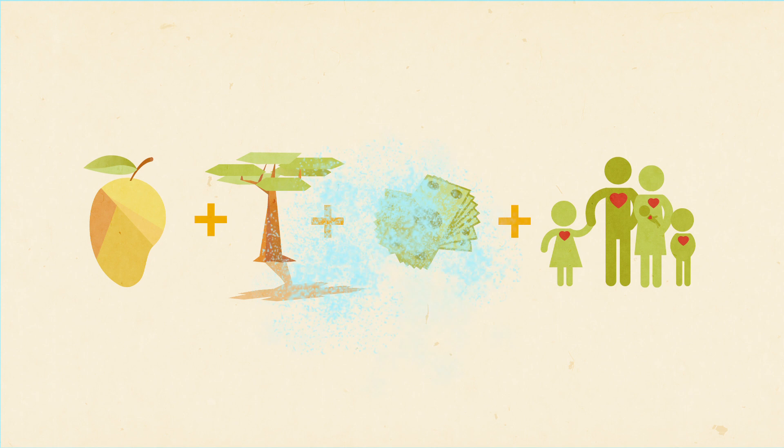Seven dollars plus access to a concrete latrine slab plus poop, a little ash, a tree seedling, and a little water equals fruit, shade, income, and healthy families.